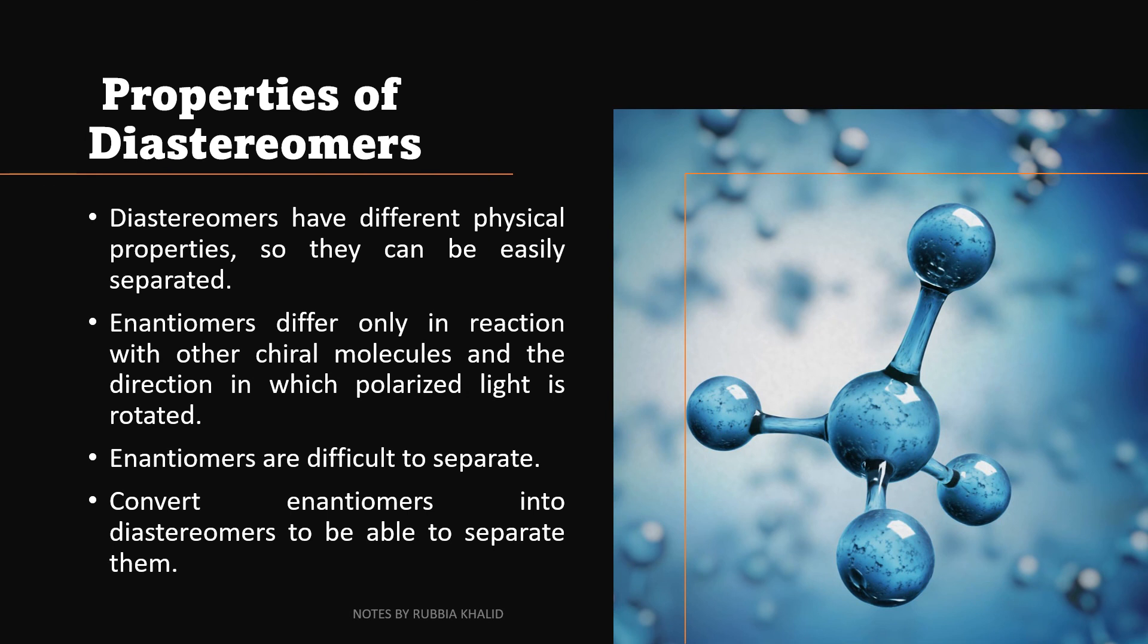In the end, we will look at some properties of diastereomers. Diastereomers have different physical properties, unlike enantiomers, which they have same physical properties. Diastereomers have different physical properties, so they can be easily separated. Enantiomers differ only in reaction with other chiral molecules and the direction in which polarized light is rotated. Enantiomers are difficult to separate, while diastereomers are not. Convert enantiomers into diastereomers to be able to separate them.